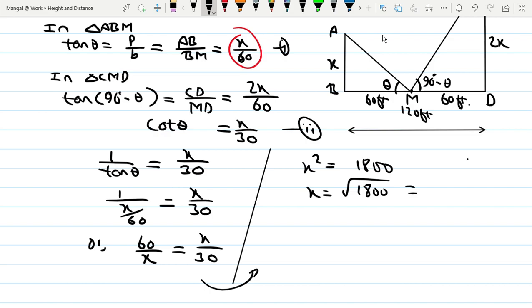Taking the square root, x equals square root of 1800, which is 30 root 2, or approximately 42.42 or 42.43 meters.